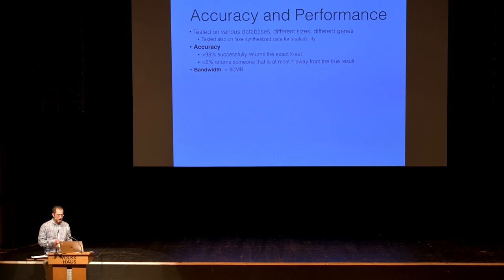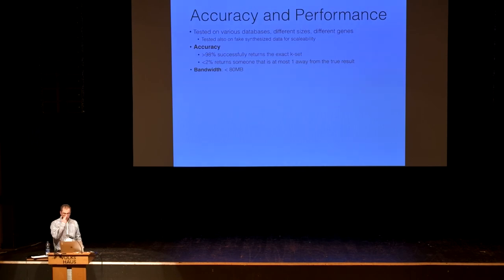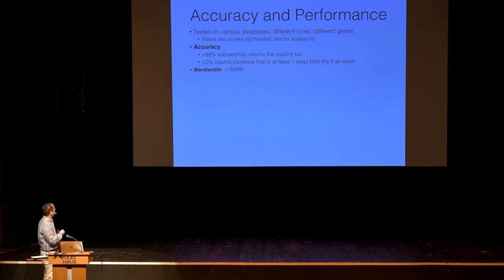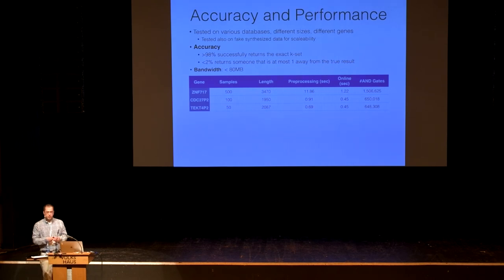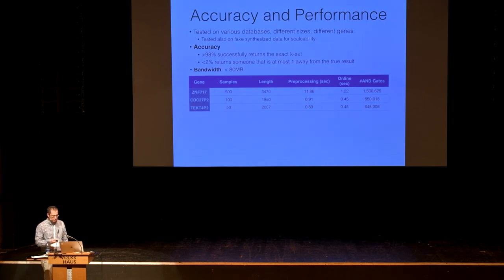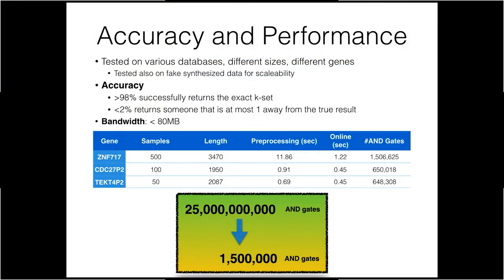We tested this on various databases of different sizes and different genes. Accuracy was very high — 98% of the time returning the exact result set — and I showed numbers across different genes, database sizes, genome lengths, and query times. Most impressively, we took a computation that was supposed to require 25 billion gates and reduced it to something so small that it runs in under a second and a half, at the cost of being an approximation rather than exact — but in most cases good enough for the application.